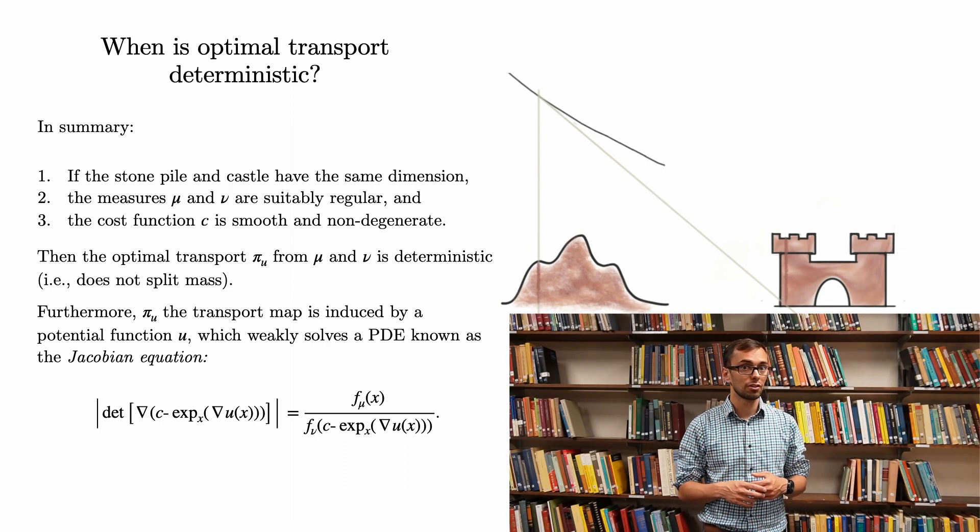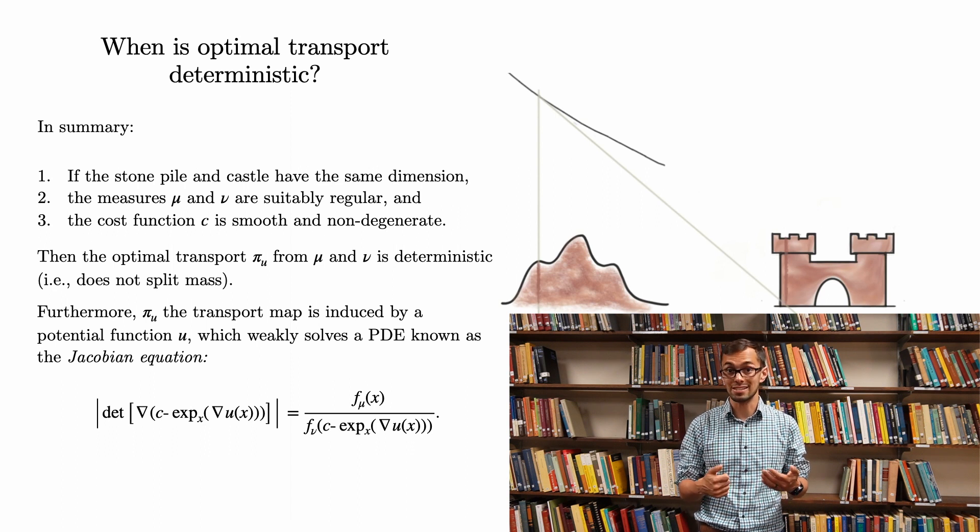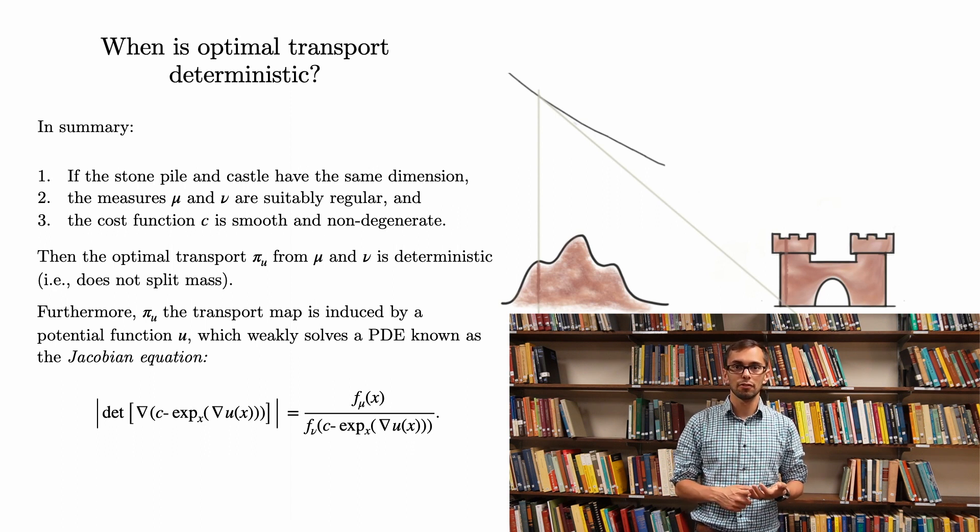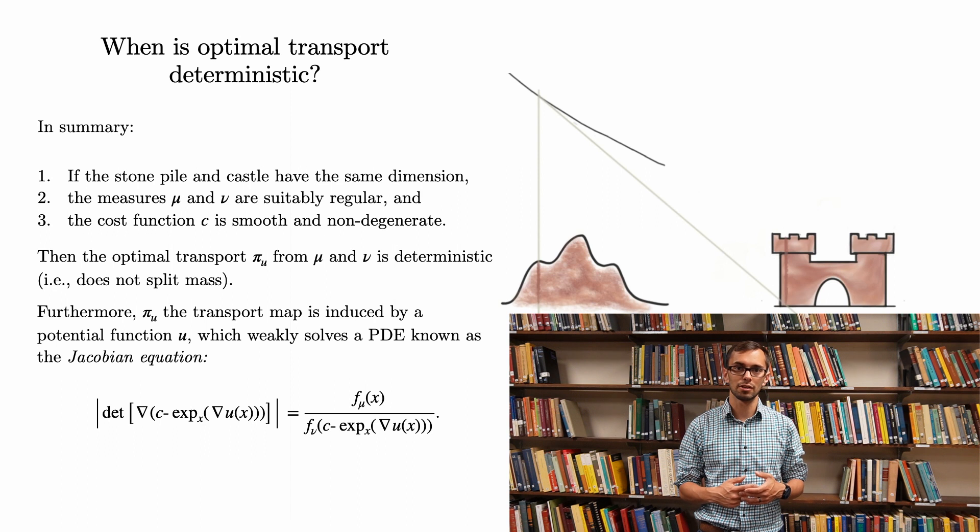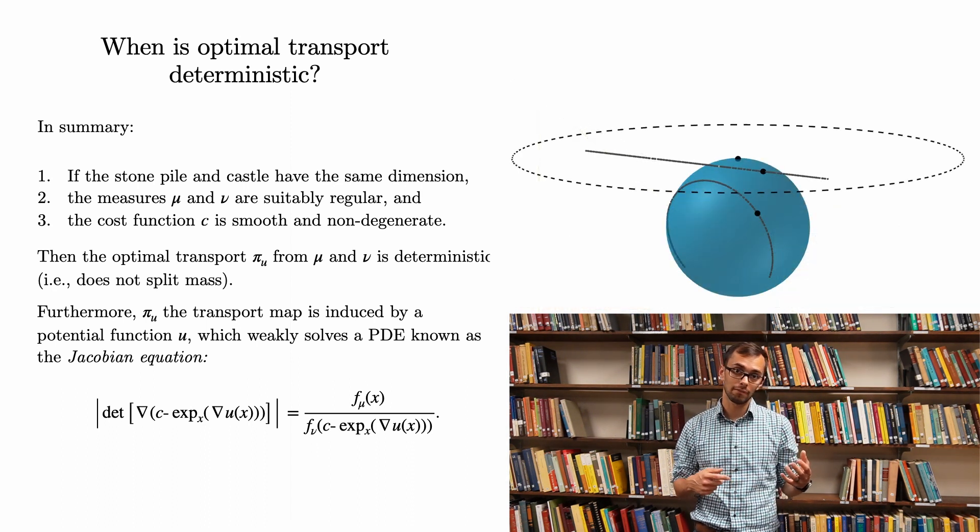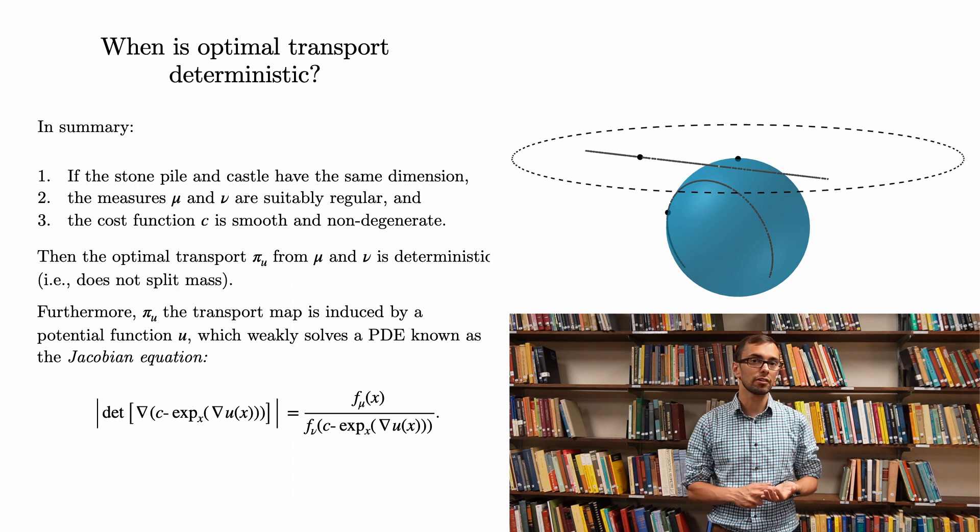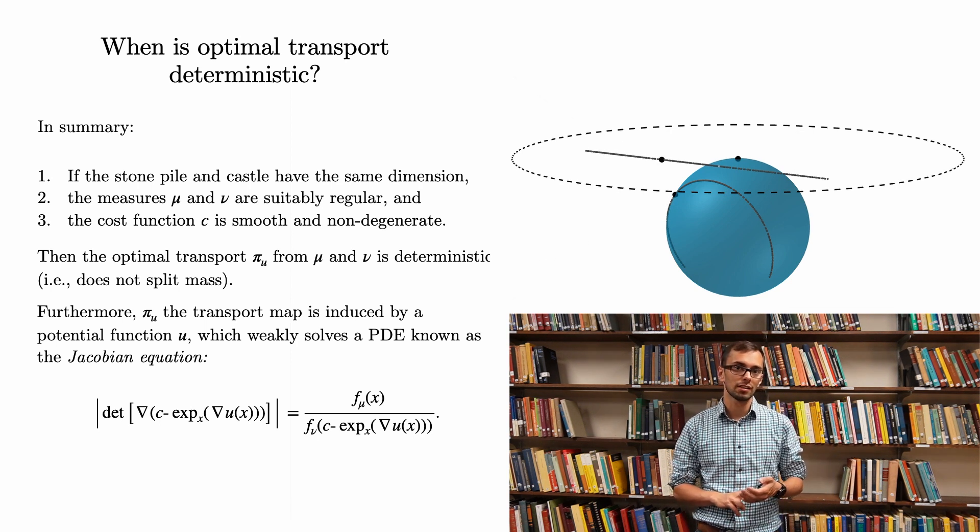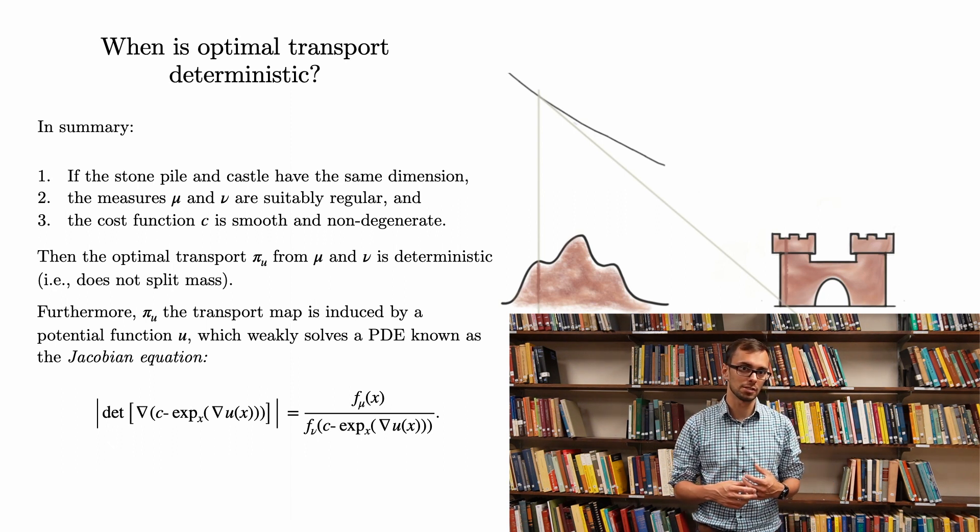Before moving on, there are a few points that I should make. First, the potential here is not u, so this picture should be considered a heuristic diagram instead of a precise image. Second, for the square distance cost, the c exponential terms which appear in the Jacobian equation correspond to something known as the exponential map on a Riemannian manifold, and this is where the name comes from. There are some very deep connections between optimal transport and differential geometry, but I won't be able to discuss them here in this talk. Finally, Monge's original cost function does not satisfy the third hypothesis of this theorem, which is one of the main reasons why the square distance cost is preferable.